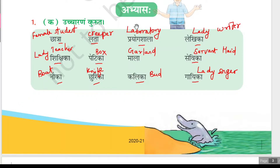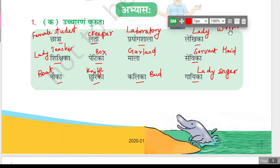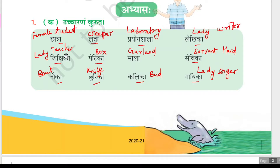Chatra means female student. Latha means creeper. Prayogashala means laboratory. Lekika means lady writer. Sikshika means lady teacher. Petika means box. Mala means garland.